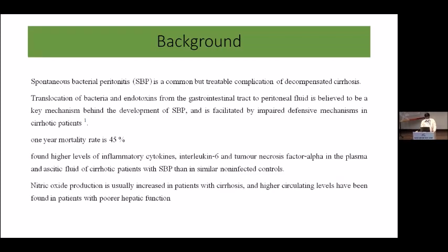The pathophysiology of SBP involves translocation of bacteria and microbes from the gastrointestinal tract to the nearby lymph nodes, and from the lymph nodes through the lymphatics it traverses the systemic circulation, coming to the GI tract where there is an impaired defense mechanism in the cirrhotic patient. Depending upon the degree of defense impairment, if the patient has poor opsonization activity, the patient will develop SBP.